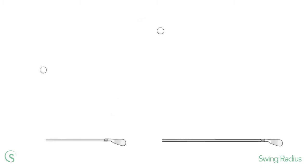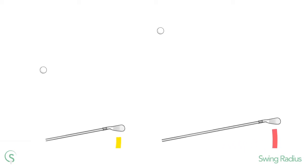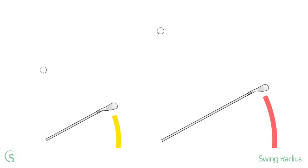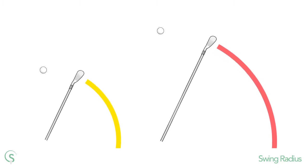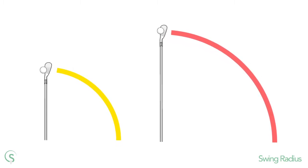The same concept applies in golf. If you take two golfers pivoting their bodies with the same rotational speed but have different sized swing radiuses, the one with the larger radius will swing the club head faster. And this of course results in hitting the ball further. So does this mean if you maximise your swing radius like Bryson, you'll hit the ball further?